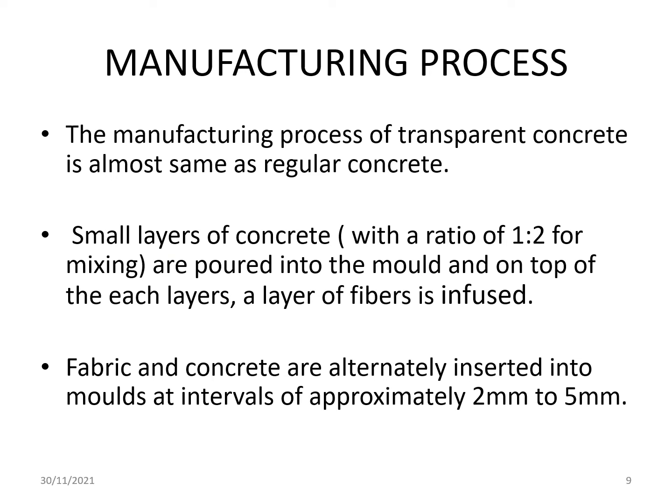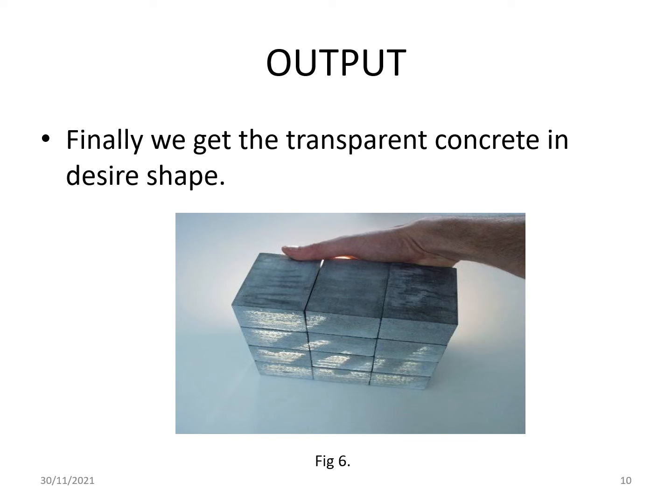Manufacturing process: The manufacturing process of transparent concrete is almost the same as regular concrete. Small layers of concrete with a mix ratio of 1:2 are poured into the mold, and on top of each layer a layer of fiber is infused. Fabric and concrete are alternately inserted into molds at intervals of approximately 2 mm to 5 mm. Finally, we get the transparent concrete in the desired shape.